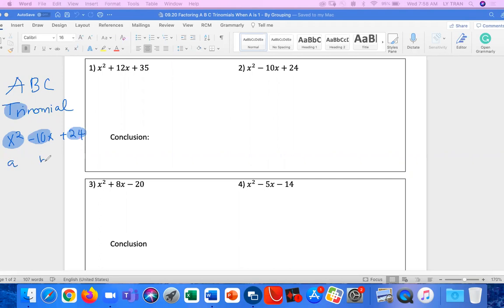So right here we've got A, B, and C. A being the number in front of x squared. How many x squared we have? We have one of them. So A right here equals 1. B being the number in front of x is going to be negative 10. And C is the number by itself. So we got 24.